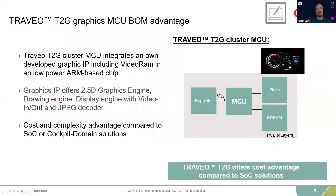The Taveo second-generation cluster MCU integrates an own developed graphic IP including video RAM, and we work with low-power ARM CPU cores. The graphic IP itself offers a 2.5D graphics engine, drawing engine, display engine with in and out, and a JPEG decoder. A word about the wording '2.5D engine': this is a 2D engine where an image is stored as X and Y, which gives a lot of advantage over the much larger and more costly 3D engines. Nevertheless, we allow certain 3D operations — a typical one is rotating an image over a virtual set axis, which can be used to simulate 3D-like animations.